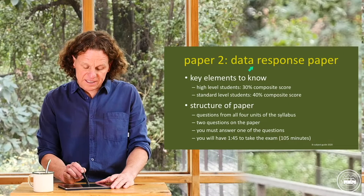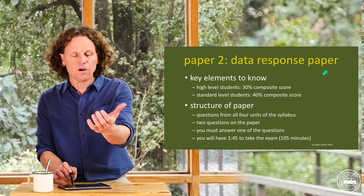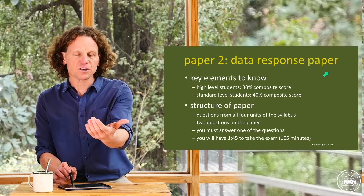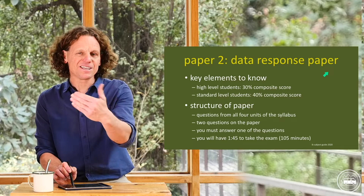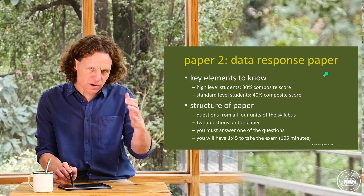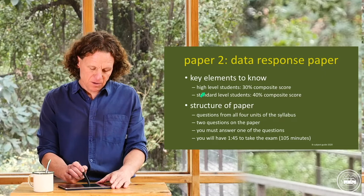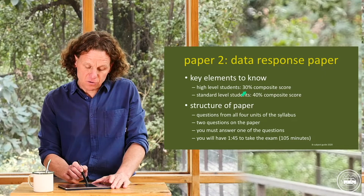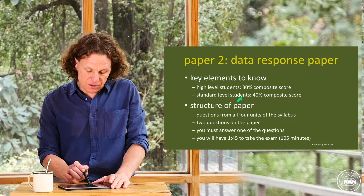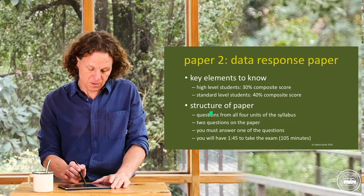Paper 2 is the data response paper, meaning they are going to give you an article, a set of data, and information, and that is what you write — that is the structure you must live in for your answers. So if you're a high level student, Paper 2 is worth 30% of your composite score. If you're a standard level student, it's worth 40% of your composite score.